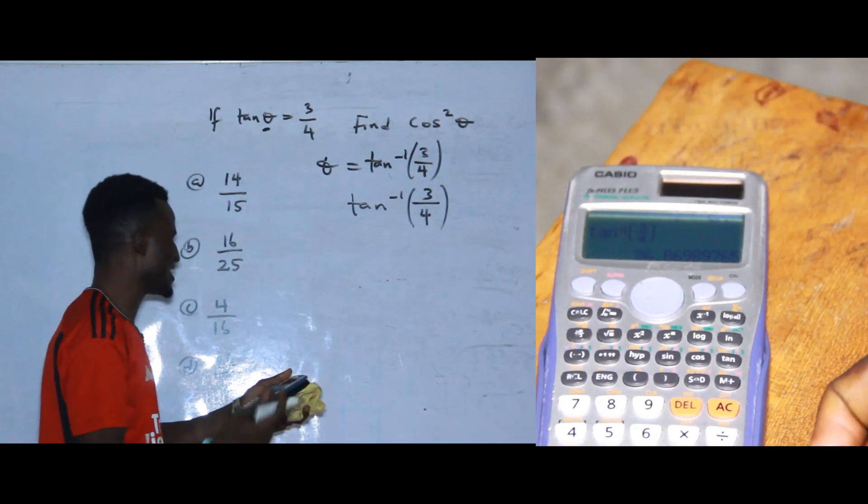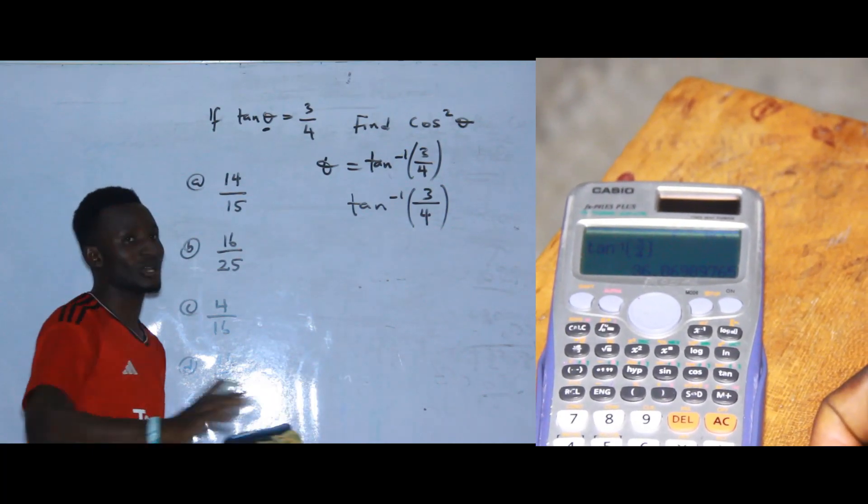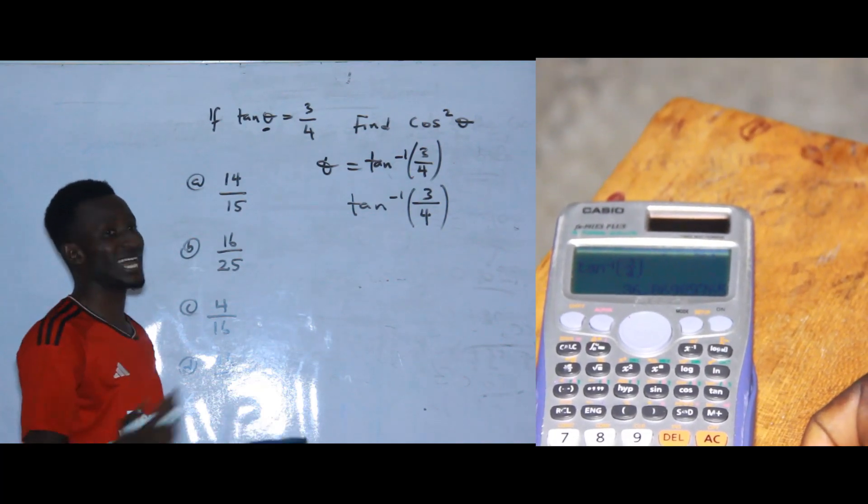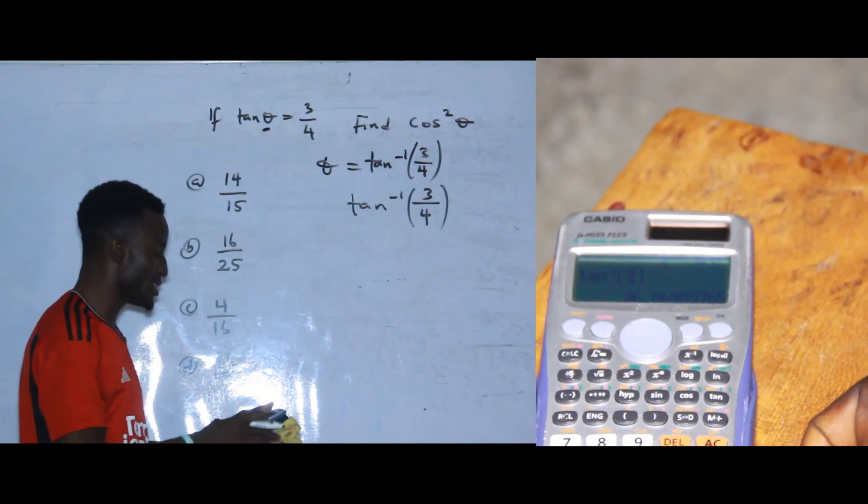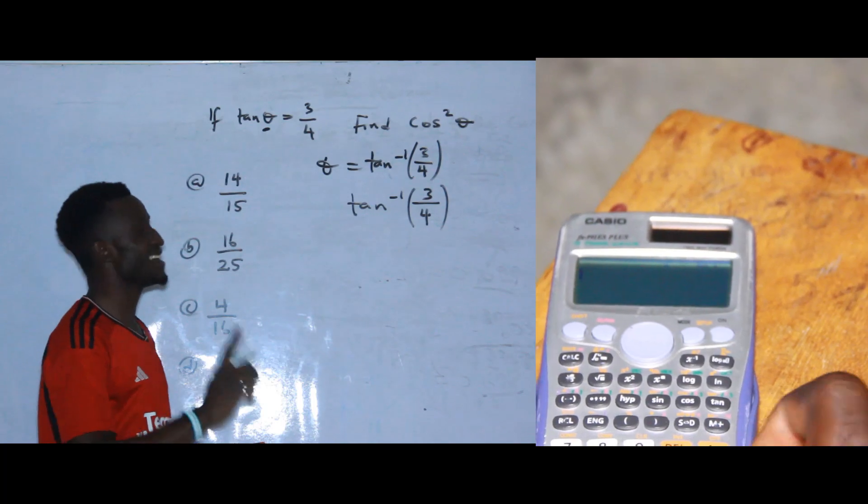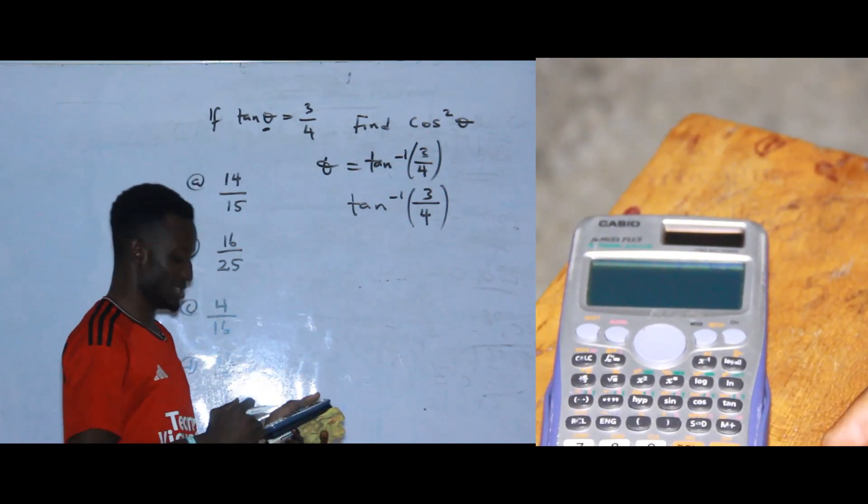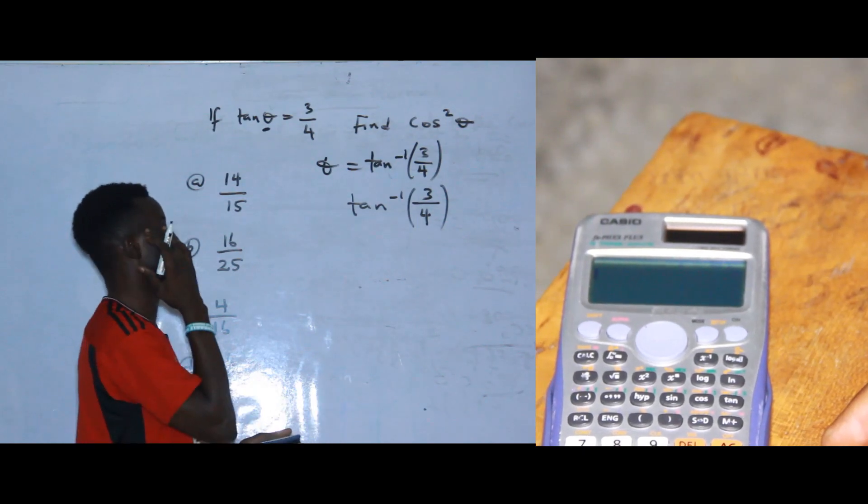Once you close the bracket, press equals to. When you press equals to you observe that your answer is 36.8 something. I don't care because of the instruction of the question. The reason why I don't care is because I can use answer straight. Now press AC. Once you press AC, don't forget the last operation—the answer is still at the down button of your calculator.